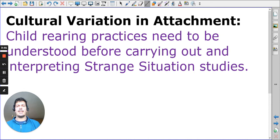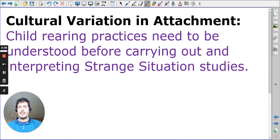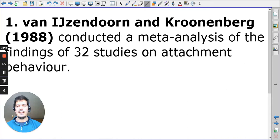The first thing we need to consider in terms of cultural variations is that we need to understand child-rearing practices before we carry out and interpret the strange situation. After the strange situation in terms of types of attachments, we find that this becomes almost a universal tool for researchers and psychologists. However, we're going to see that there are a few hiccups in the process. This statement — that you need to understand child-rearing practices before you interpret the strange situation studies — is a lot more telling than you think.